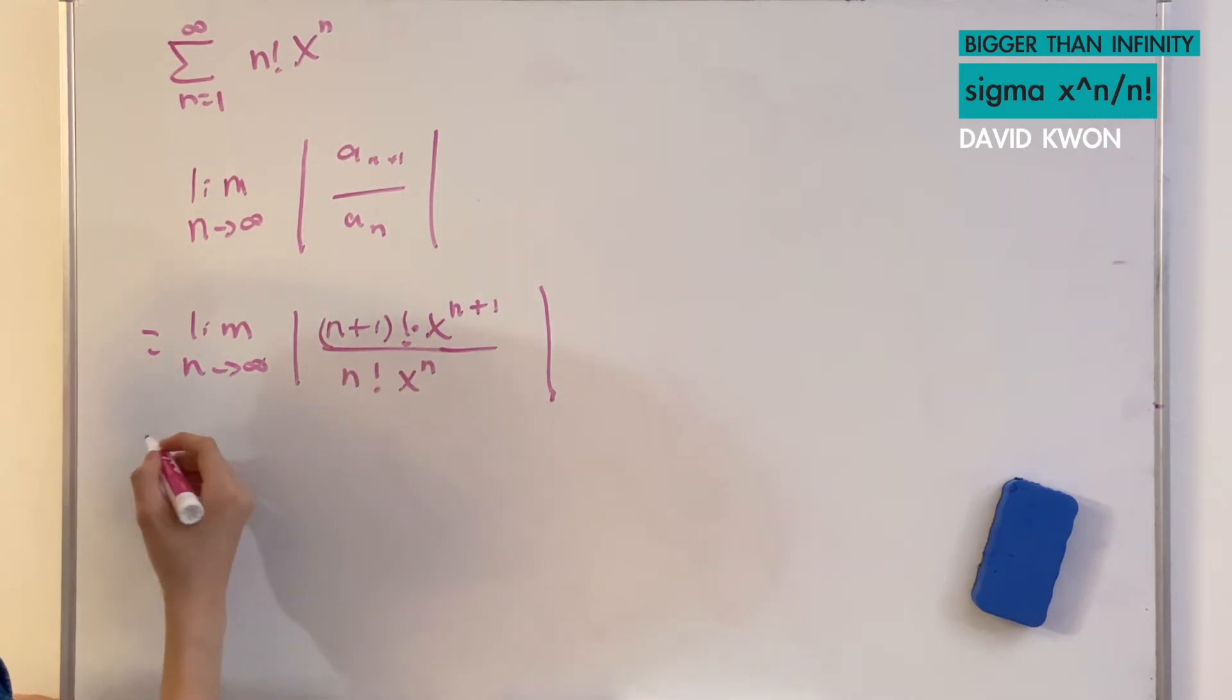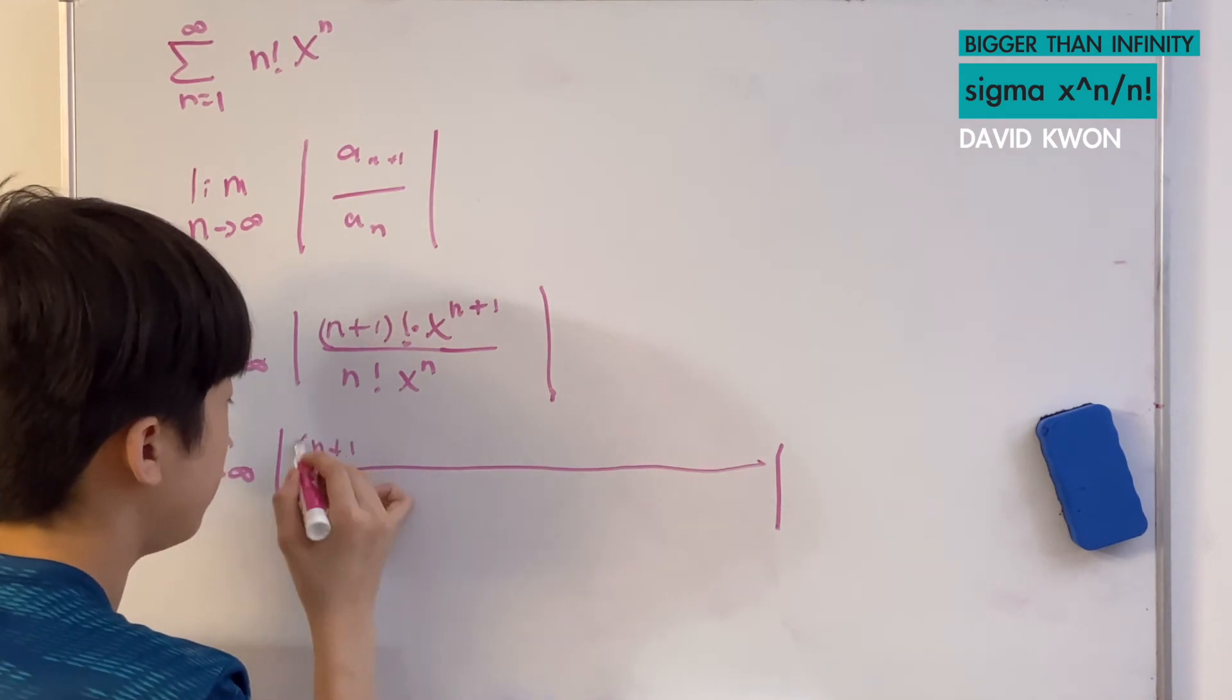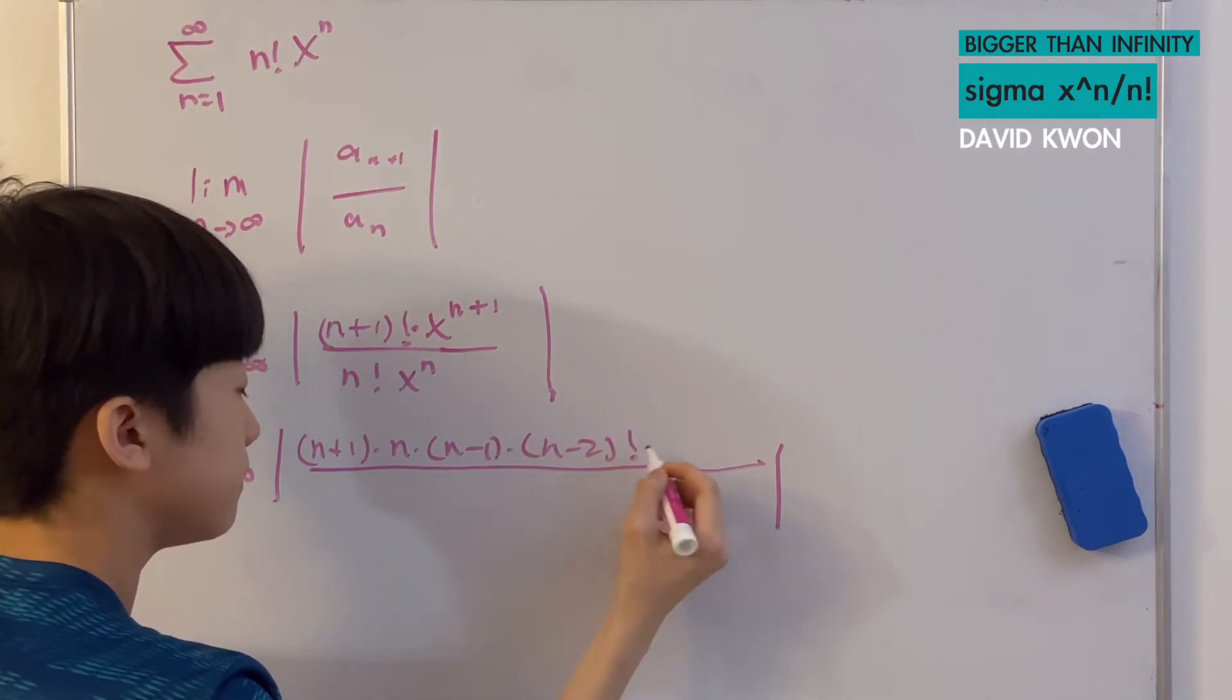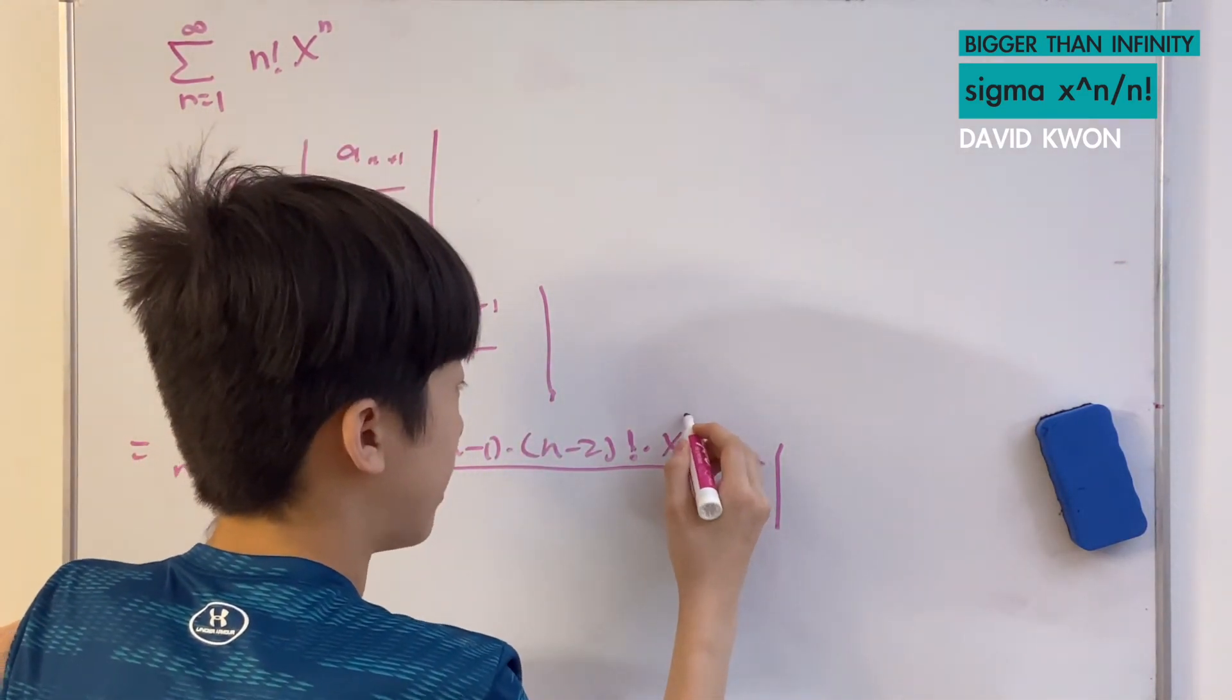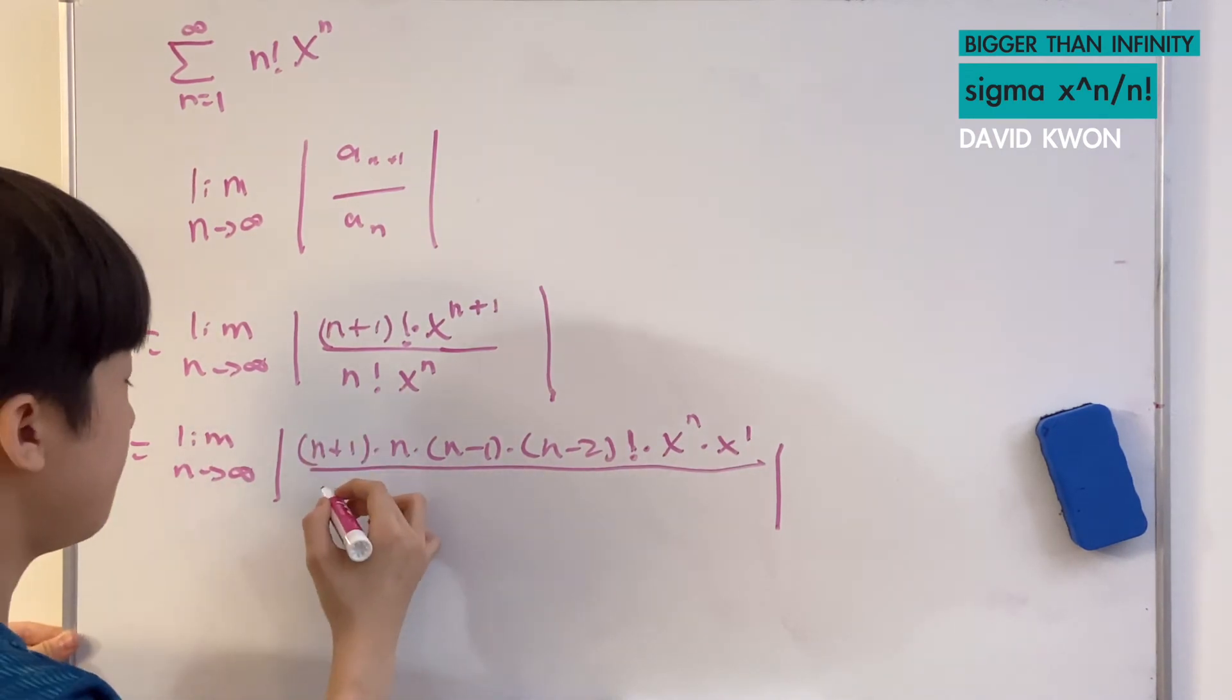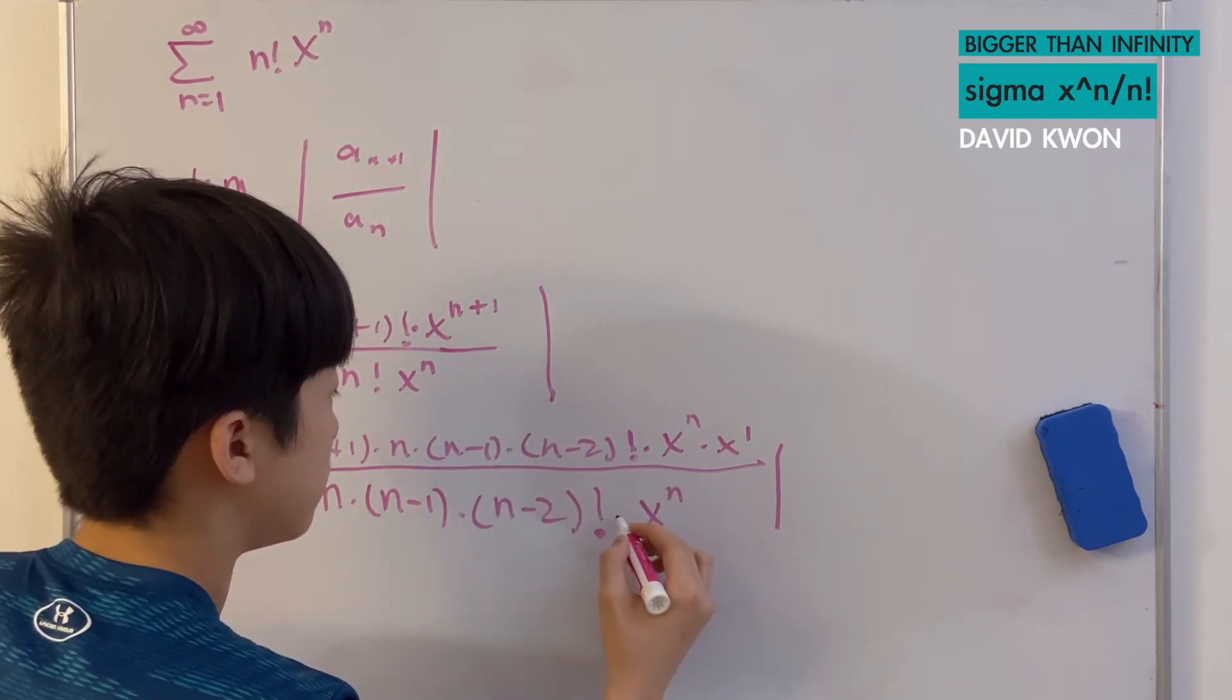Again, we make this even more complicated so we can cancel things out. (n+1) factorial, that is (n+1) times n times n-1 times n-2. And then you guys see the point. We will end it there by setting a factorial sign. And then times x to the power of n+1. n+1 can also be equal to x to the power of n times x to the power of 1. Over n factorial can be expressed as n times n-1 times n-2. And then I will cut it short right there also. And then it times x to the power of n.